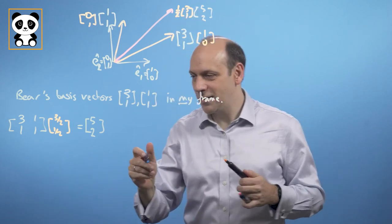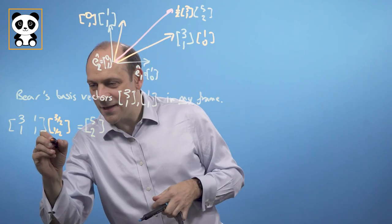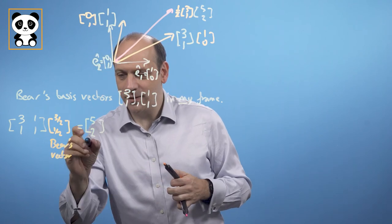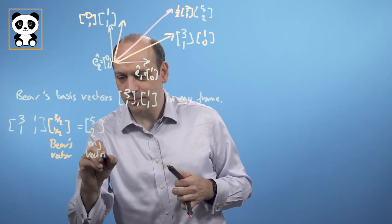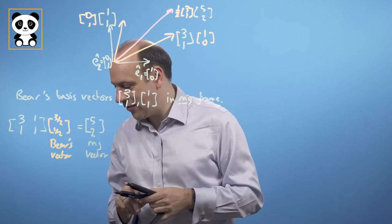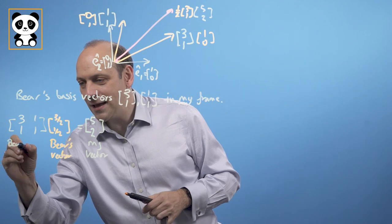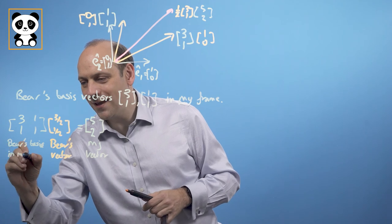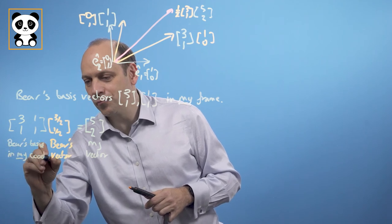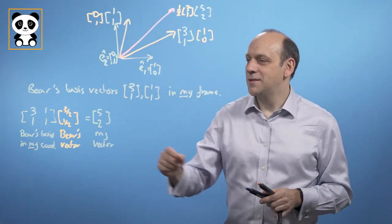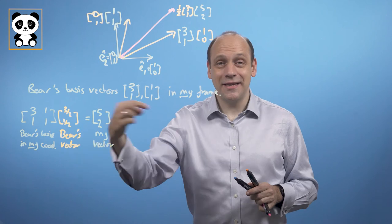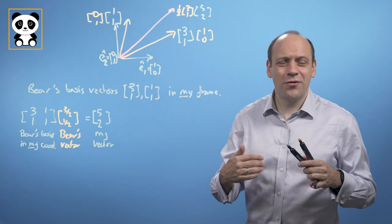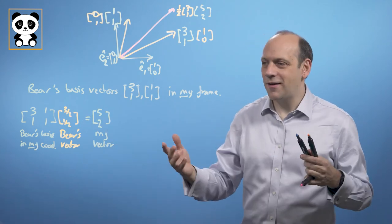Those two are the same thing — this is Bear's vector, and this is my vector. This transformation matrix contains Bear's basis in my coordinate system, so it transforms Bear's vectors into my world. That's a bit of a problem, because usually I'd want to translate my world into Bear's world, so we need to figure out how to go the other way.